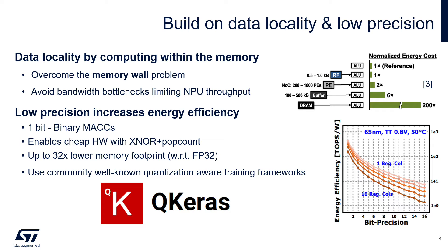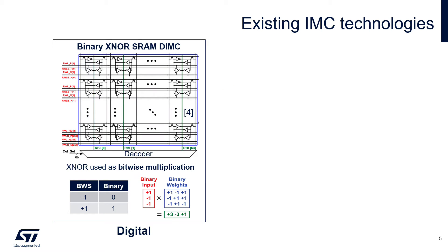Imagine that we can design binary neural networks with one-bit weights and one-bit activations — the multiply-accumulate becomes essentially XOR and popcount, which is very efficient, low power, low complexity, and high parallelism. That would be fantastic. We need tools to do that, and our choice is Q-Keras, because Q-Keras allows us to mix and match precision with quantization-aware training and fractional integer quantization.